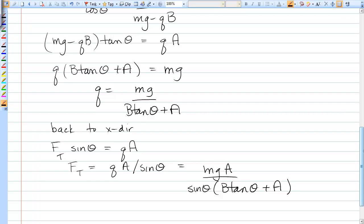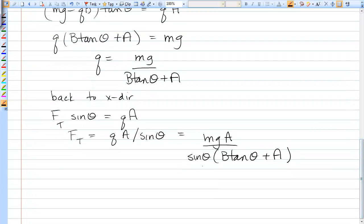And I could probably make that just a little bit nicer by dealing with that sine and tangent together. So I have Ft is mgA, and sine times tangent is just cosine, B cosine theta plus A sine theta. And that's the answer for Ft.